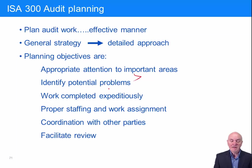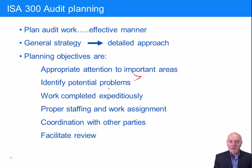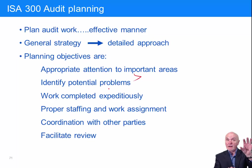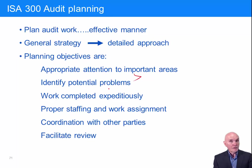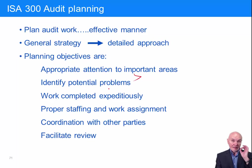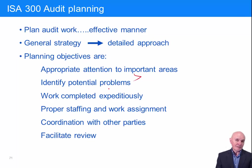Work completed expeditiously — which means quickly and effectively. So if a client had one office in London and a warehouse in Edinburgh, about 500 kilometers away, you want one visit to do everything. You don't want to go up one week for receivables, another week for payables, and another for inventory. You want to go up for two or three days and do the whole thing in one visit — just common-sense planning.